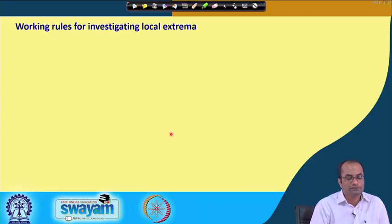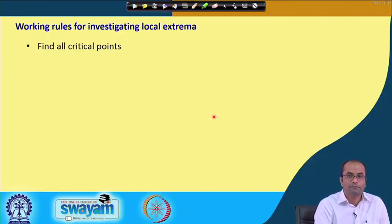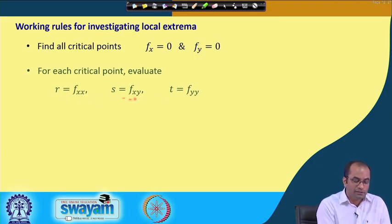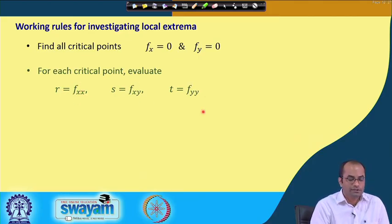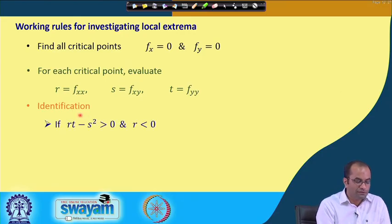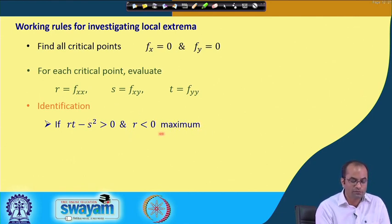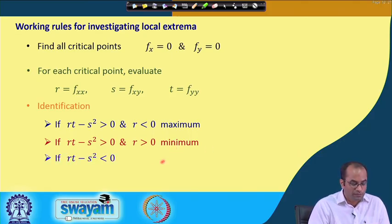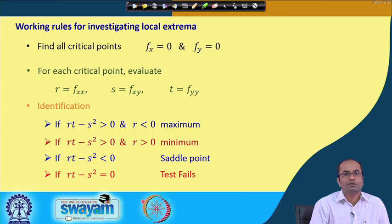The working rule for investigating local extrema: first find all critical points by solving f_x = 0 and f_y = 0. For each critical point evaluate r = f_xx, s = f_xy, and t = f_yy. Then: if rt - s² > 0 and r < 0, the point is a local maximum; if rt - s² > 0 and r > 0, it is a local minimum; if rt - s² < 0, it is a saddle point; if rt - s² = 0, the test fails.